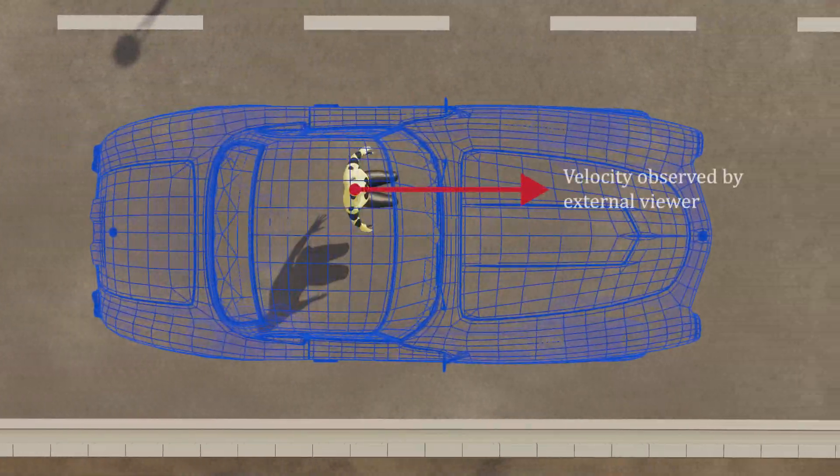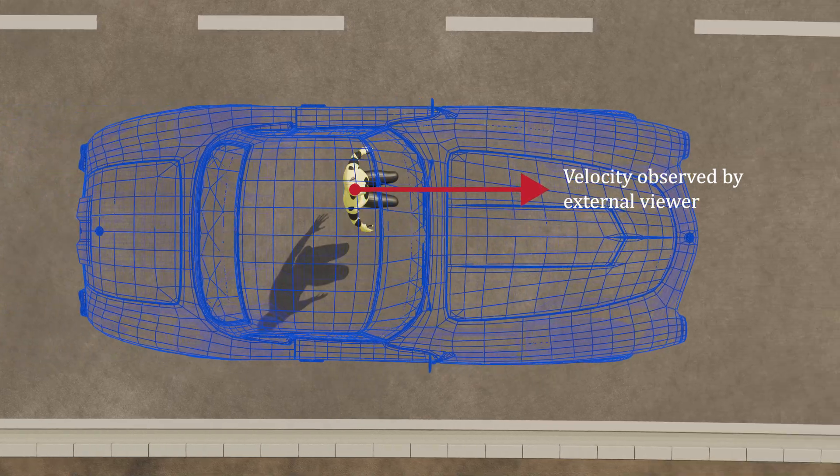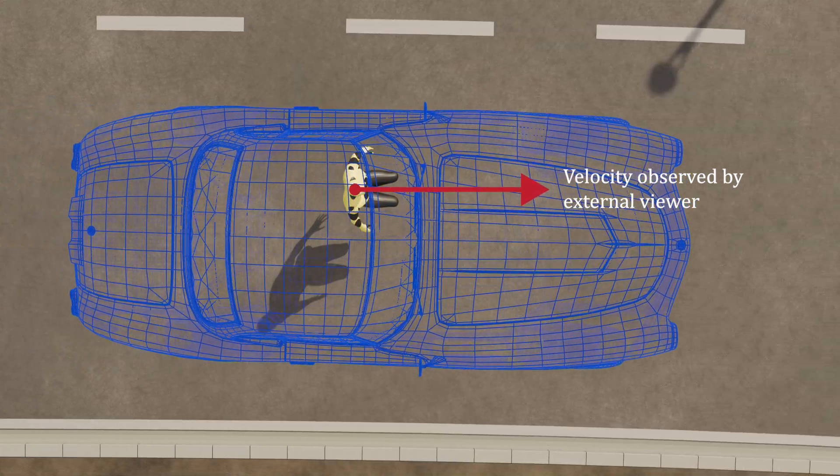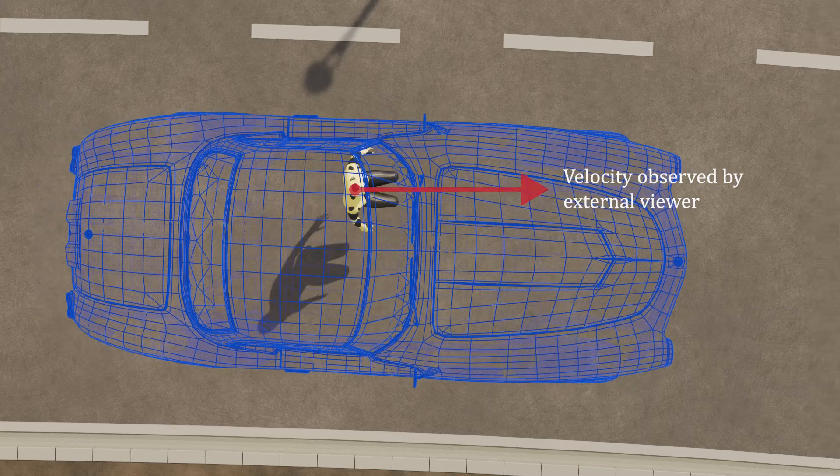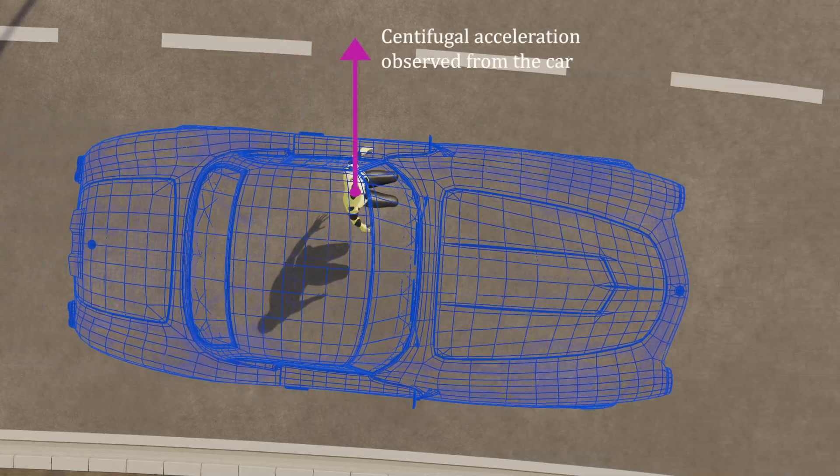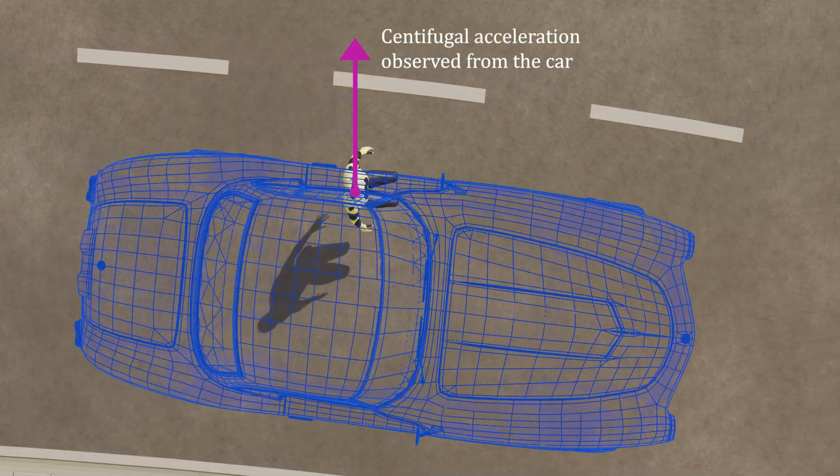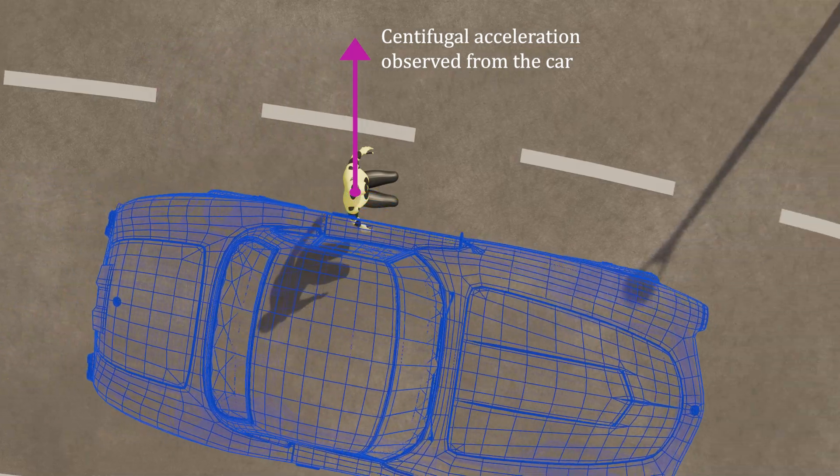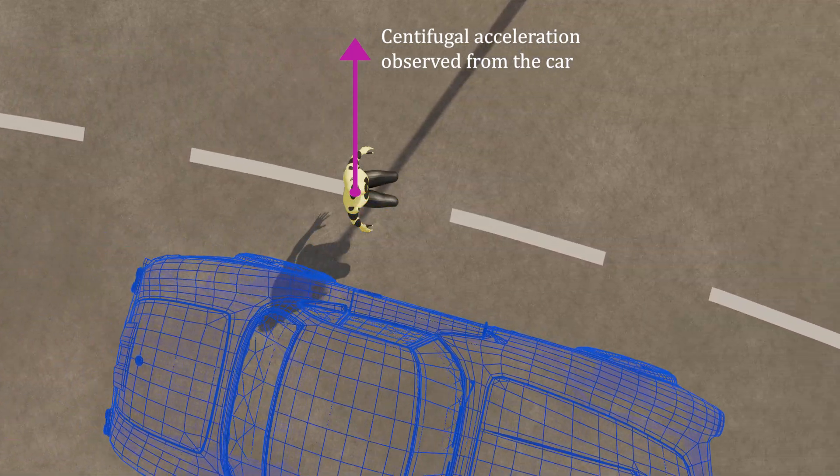Your body is moving in a straight line before the curve, so it wants to continue moving in a straight line after the car starts turning under it. And so the car turns, your body continues moving in a straight line, and it looks from the car's perspective like you're going to the left.